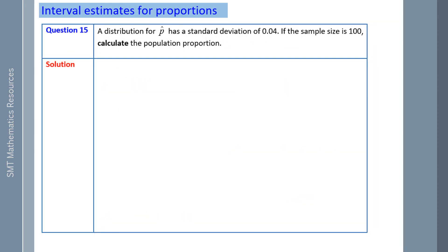The distribution for P hat has a standard deviation of 0.04. If the sample size is 100, calculate the population proportion. So little n, which is the sample, is 100. The standard deviation formula is the square root of P times 1 take P over N. Now, we know that our standard deviation is 0.04. Let's substitute that into our left hand side. We know the sample size is 100. So all we need to do now is find P.